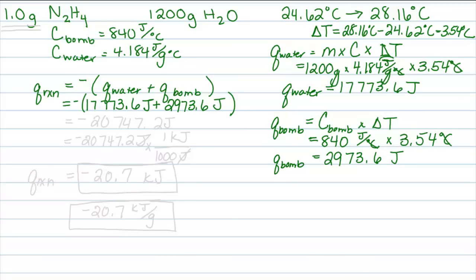So when I add these two together, 17,773.6 plus 2,973.6, I get that it released 20,747.2 joules, which for ease of purposes, I'm going to make into kilojoules. So negative 20,747.2 joules, for every 1,000 joules we have 1 kilojoule. So that means I'll have released 20.7 kilojoules.